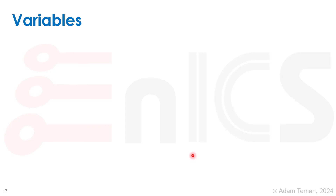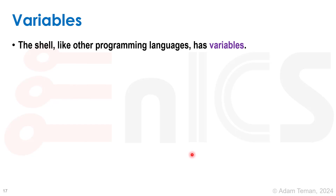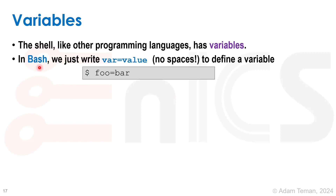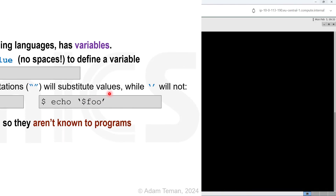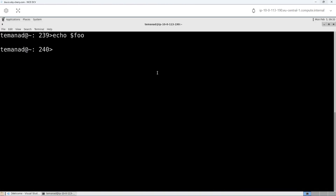Now I'm going to go over variables in bash. A shell, like any other programming language, has variables and they can be very useful — we saw that with environment variables. It's really easy: we just write var equals value. So foo equals bar will create a variable called foo whose value is bar. This is a local variable, only available in the current terminal and shell. With double quotations, it will dereference variables, so echo double quote dollar sign foo will return bar. With single quotations, it will not dereference the dollar sign.